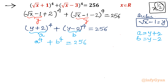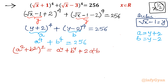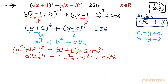Now the turn of algebraic identities. Using the formula (a² + b²)² = a⁴ + b⁴ + 2a²b², we can rearrange to get a⁴ + b⁴ = (a² + b²)² - 2a²b². This result is very important for us. Our job now is to find the values of a² + b² and a²b².